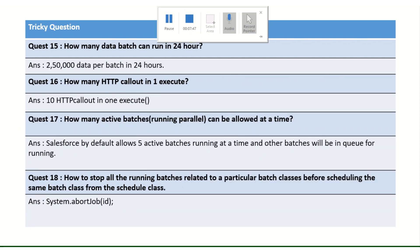How many batch jobs can run in 24 hours? We can run 250,000 batches per day. And how many HTTP callouts can you make in one execute method? In one execute, you can perform up to 10 callouts.